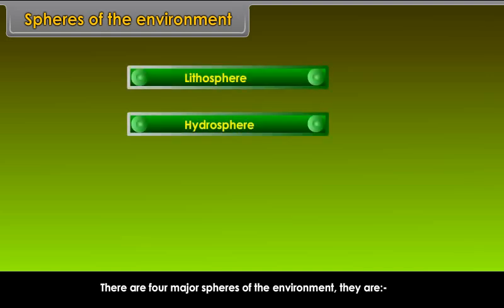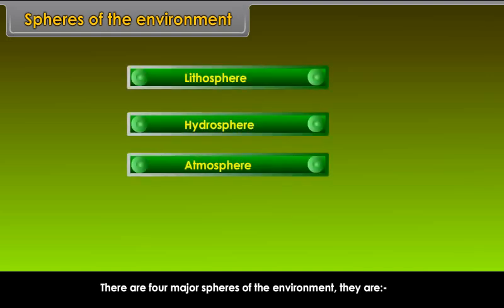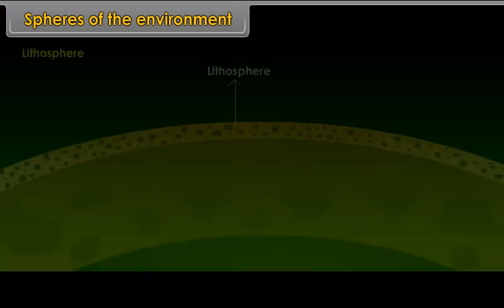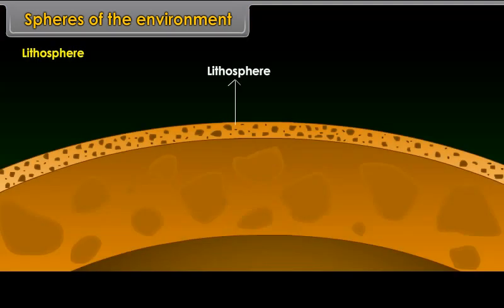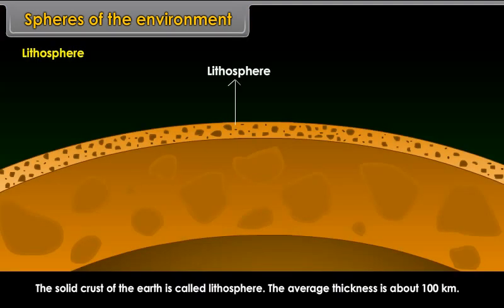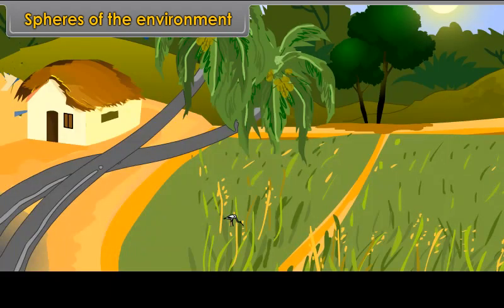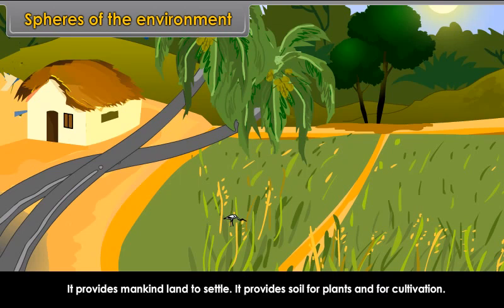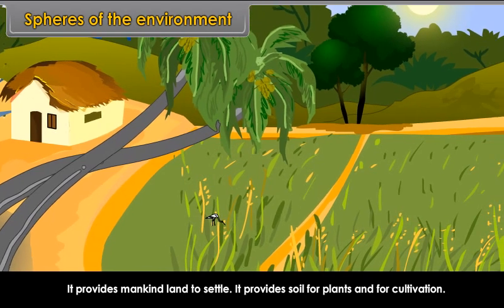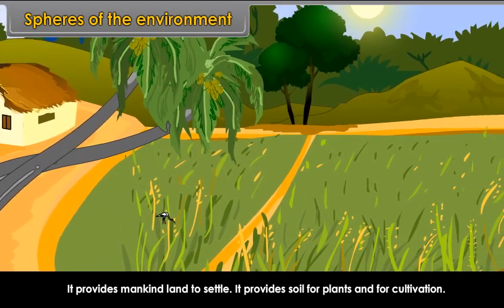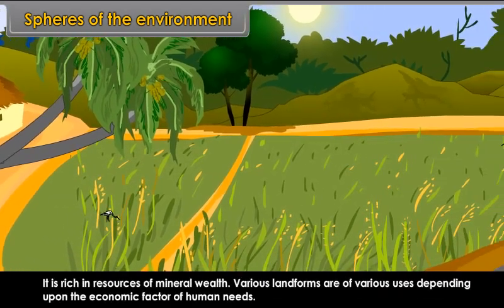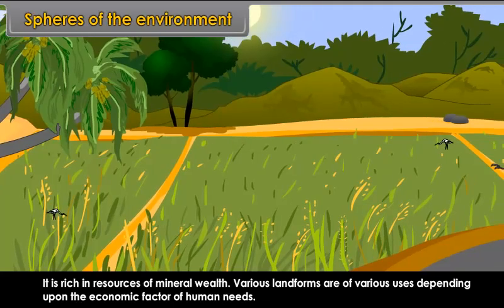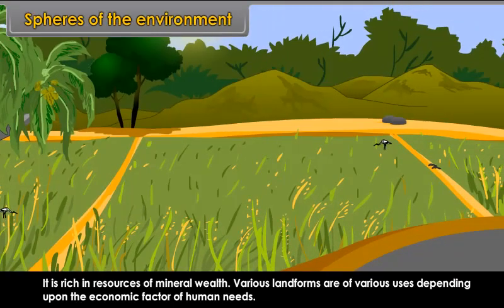Lithosphere: The solid crust of the earth is called lithosphere. The average thickness is about 100 km. Importance of lithosphere: It provides mankind land to settle, provides soil for plants and for cultivation, is rich in resources of mineral wealth, and various landforms are of various uses depending upon the economic factor of human needs.